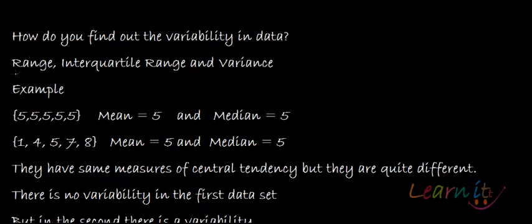One is range, one is interquartile range, one is variance. So you could actually use all of them.